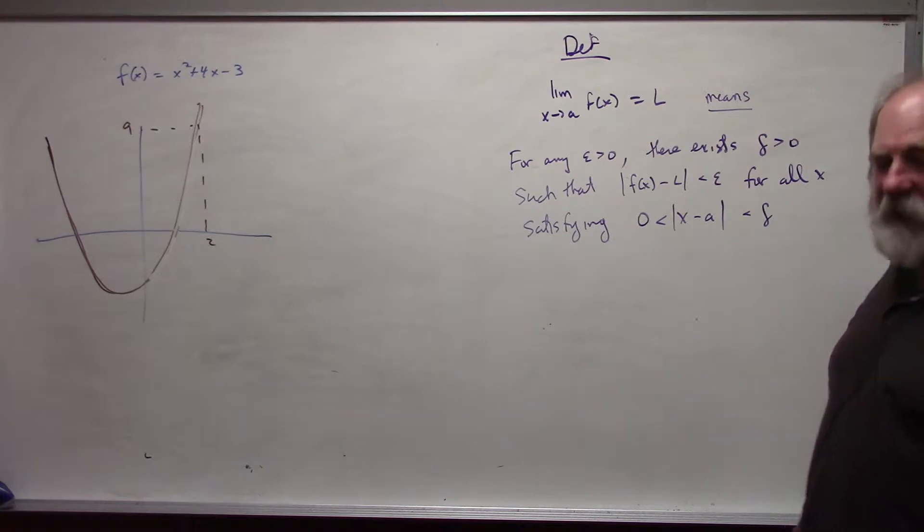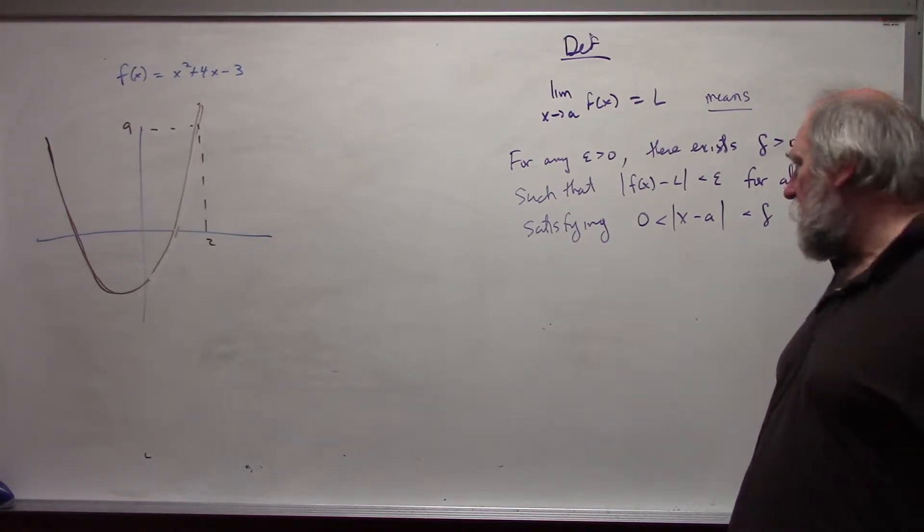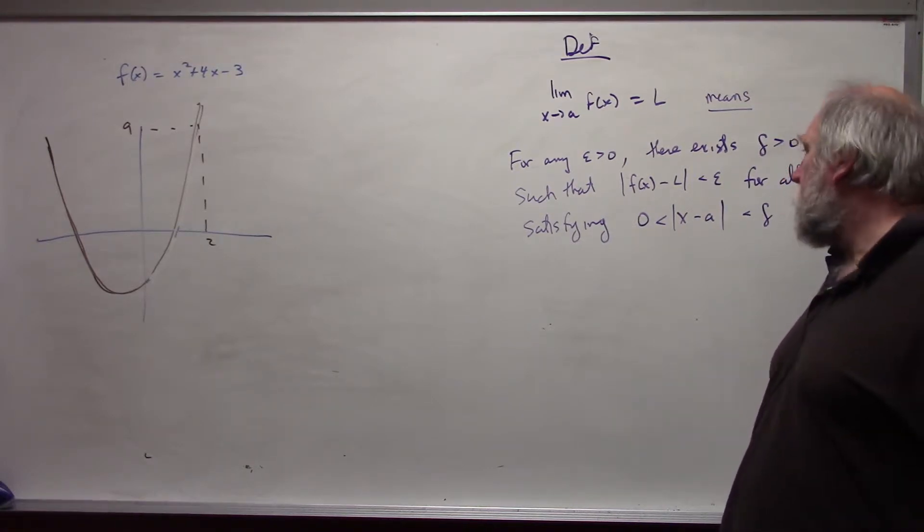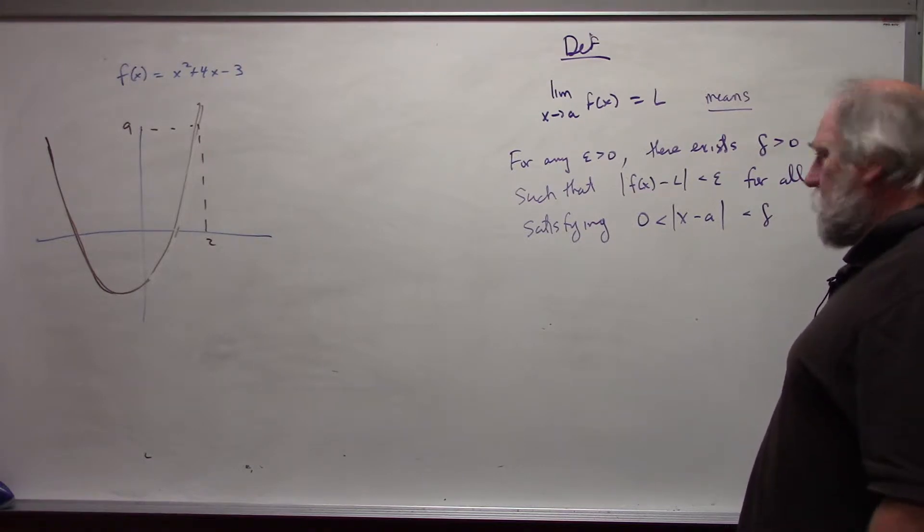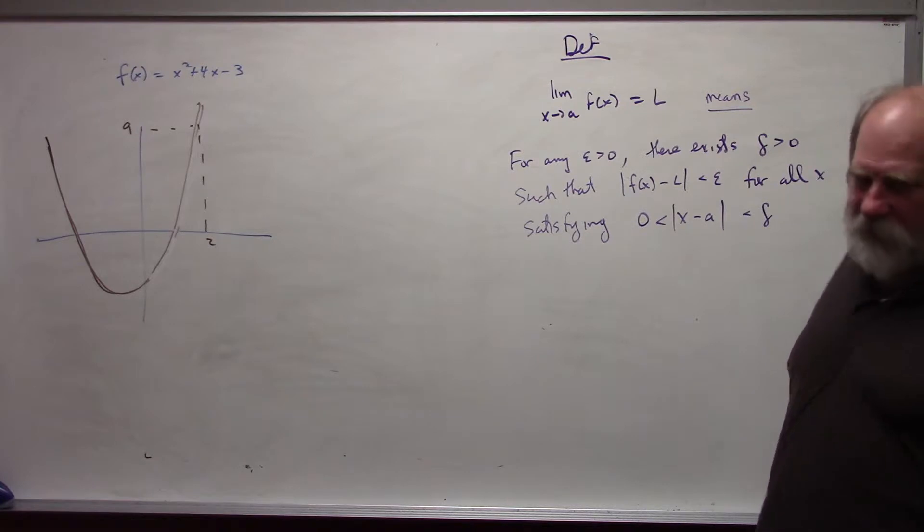Now first, epsilon and delta are Greek letters, letters of the Greek alphabet. They just represent parameters, things that we can put in specific numbers for. Don't let that bother you too much, it's just the letters that are used.